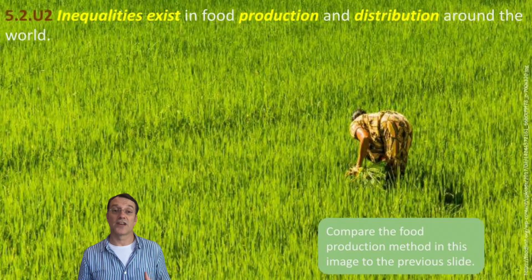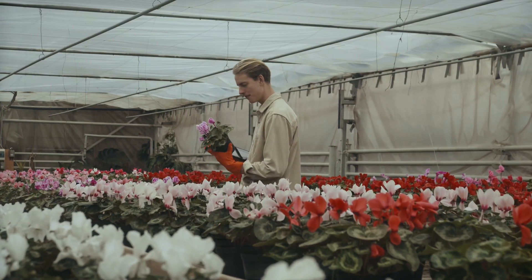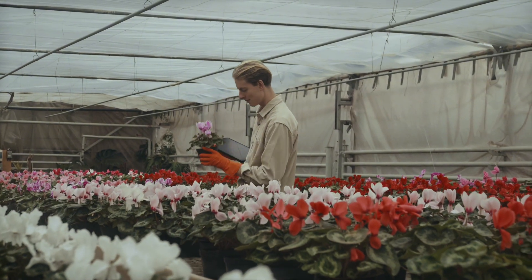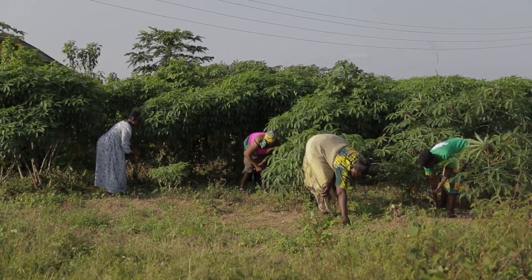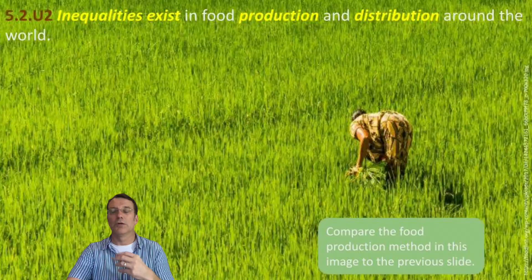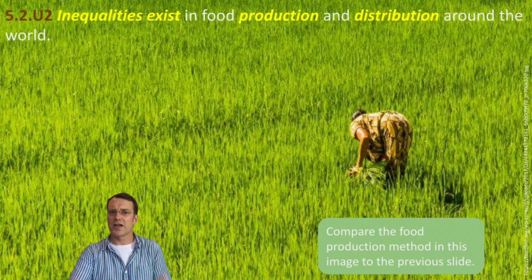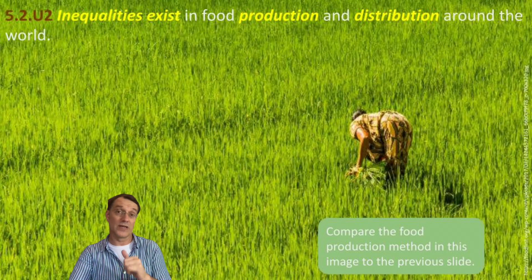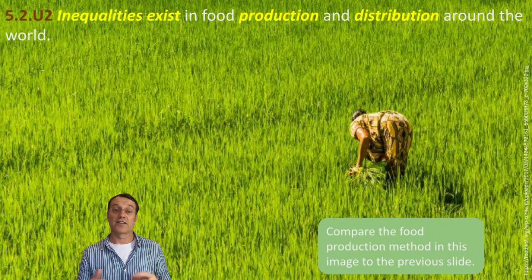There's a stark contrast in how food is produced around the world. While some regions use high-tech, industrialized methods, others rely on traditional small-scale farming. This difference isn't just about technology — it reflects bigger inequalities in resources, knowledge, and market access, which are particularly apparent in the differences between LEDCs and MEDCs. These disparities affect not only how much food is produced, but also who has access to it.